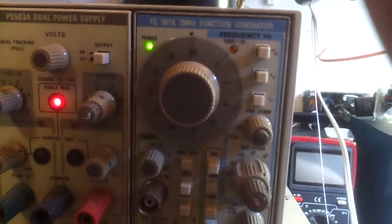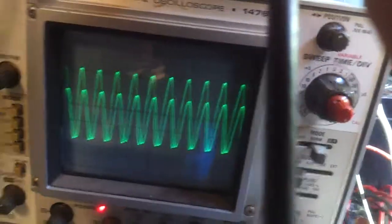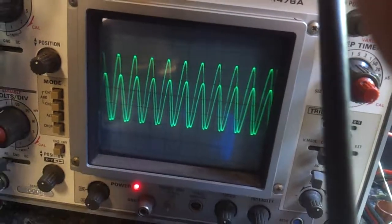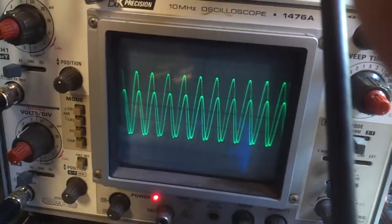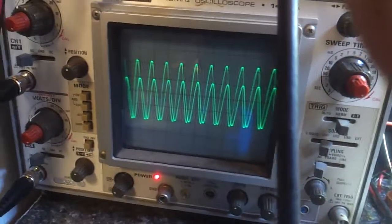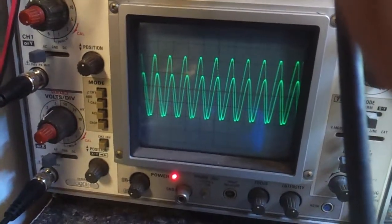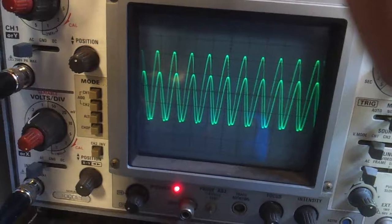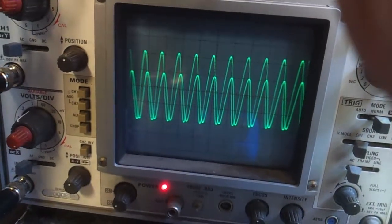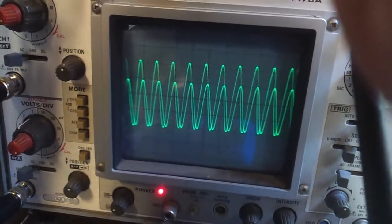So that is the effect of that 4 to 1 balun. The ears have quite a bit of loss between the input and the output, as you can see right there. And also it changes the phasing a little bit.